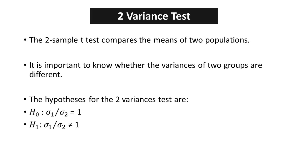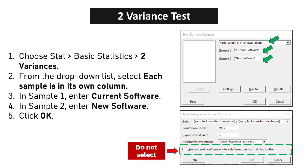Two-variance test. The two-sample t-test compares the means of two populations, and it is important to know whether the variances of two groups are different. The null hypothesis states that the variances of two populations are equal, while the alternative hypothesis states that they are not equal. Choose Stat, Basic Statistics, Two Variances. From the drop-down list, select each sample is in its own column. In Sample 1, enter current software. In Sample 2, enter new software. Click OK.